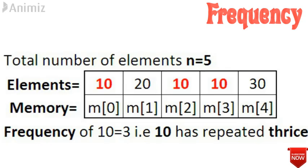Suppose we have 5 numbers: 10, 20, 10, 10, and 30, stored in memory locations m[0], m[1], m[2], m[3], and m[4]. If we want to find the frequency of 10 — that is, how many times 10 is repeated — in this example 10 is repeated thrice: at memory location 0, memory location 2, and memory location 3. So the frequency of 10 is 3.